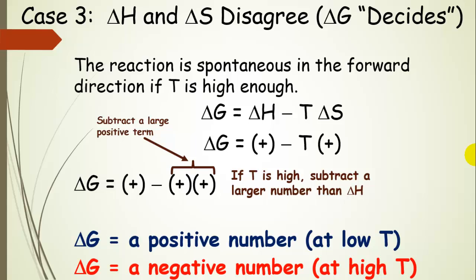So if the temperature is high enough, we subtract a larger number and delta G becomes negative. At low temperatures, delta G is positive and the reaction is non-spontaneous. As we increase the temperature, delta G will become negative and the reaction will be spontaneous in the forward direction.